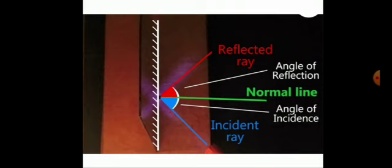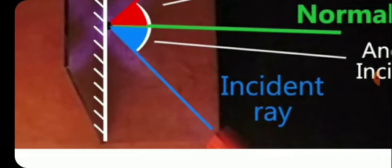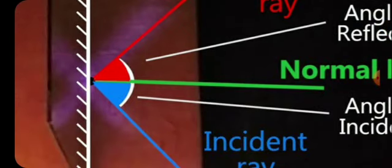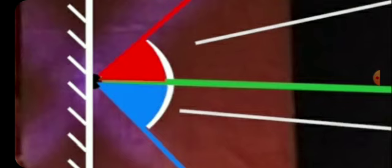Now let us try to understand the terminologies related to this concept. What is an incident ray? A ray of light falling on the surface is called an incident ray. The ray shown here in blue color is called an incident ray — it is falling on the surface of the mirror. The ray of light that leaves the surface at the point of reflection is called the reflected ray. The point at which the incident ray strikes the surface is called the point of incidence.